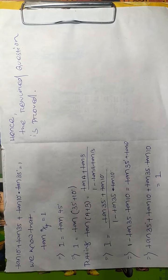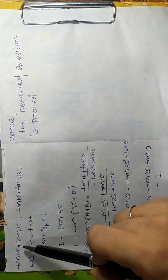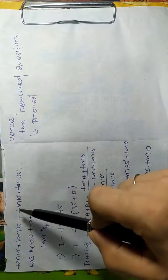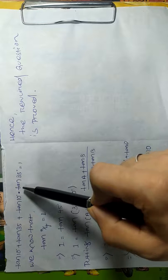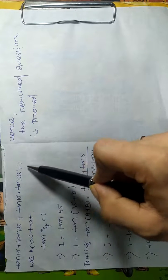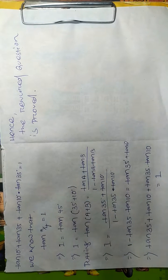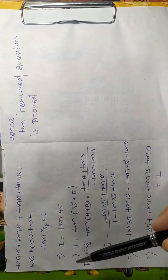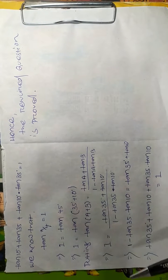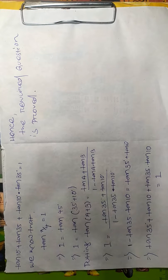Welcome guys, today we will prove tan 10° + tan 35° + tan 10° × tan 35° = 1. This is a problem which is very important for plus 2 and other trigonometry exams.